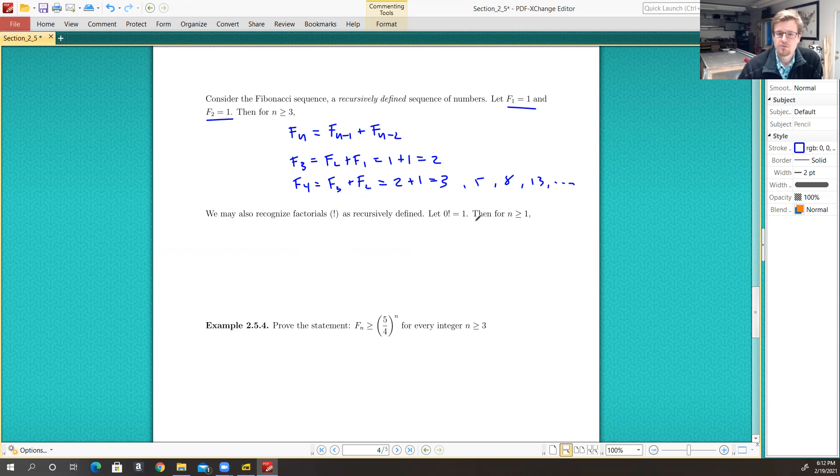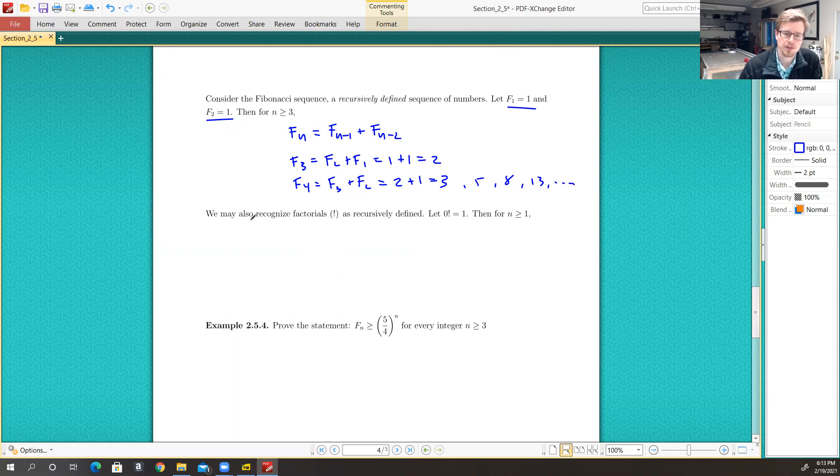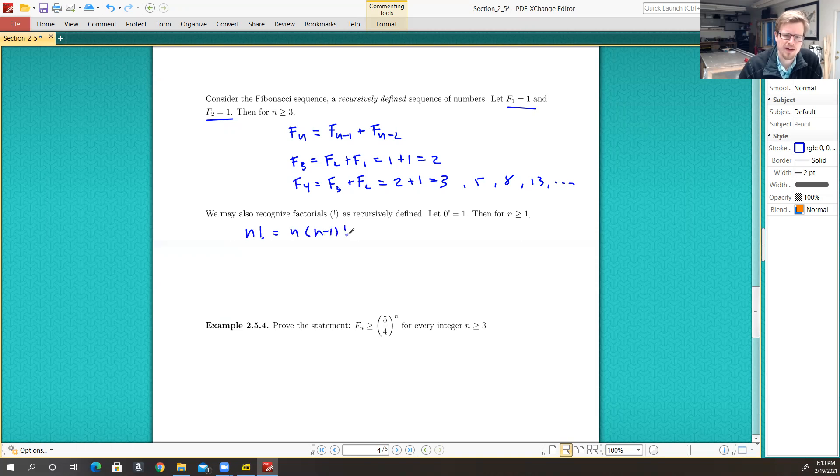Factorials can also be considered something that's defined recursively. If we let 0 factorial be equal to 1, then for any integer greater than or equal to 1, n factorial is simply n times n minus 1 factorial. So 1 factorial is 1 times 0 factorial, which is 1 times 1, or just 1. 2 factorial is 2 times 1 factorial, which is 2 times 1, which is 2.